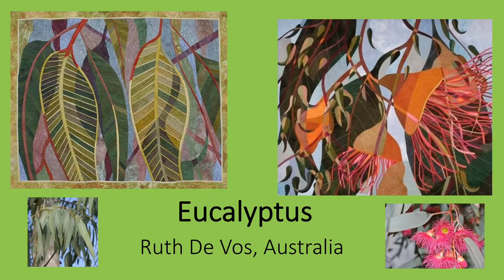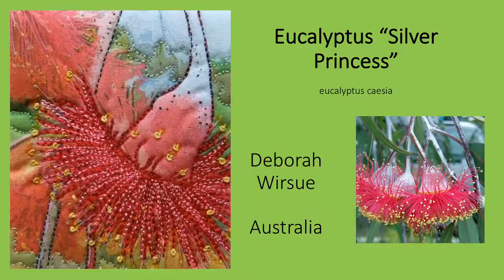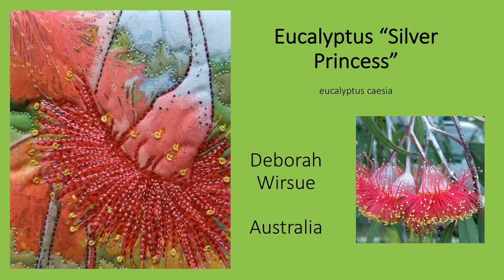I have found that eucalyptus leaves and flowers are often depicted by Australian quilters. DeVos has used appliqué very effectively to capture both the leaves and blossoms in two small quilts. This is another Australian quilter's depiction of eucalyptus blooms — Debra Wersue captured a specific variety, silver princess. She has used hand-painted fabric and stitchery to capture the blooms' pink stamens. Her embroidered French knots work perfectly for the yellow anthers on their tips.